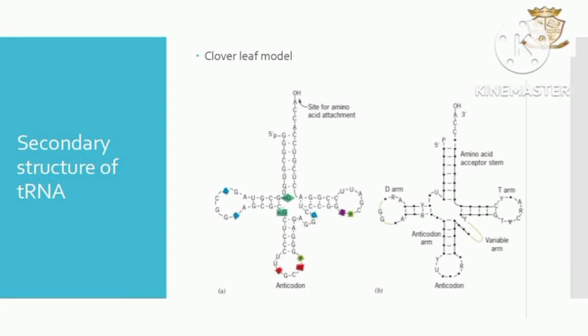In the cloverleaf model, there are five arms: the amino acid acceptor arm, the T arm, the variable arm, the anticodon arm, and the D arm.